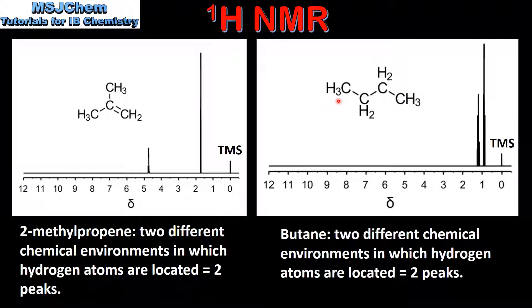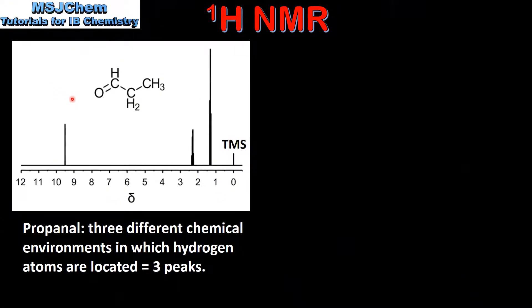Our next example is the NMR spectrum for butane. The three hydrogen atoms in the two CH3 groups are in the same chemical environment. The two hydrogen atoms in the two CH2 groups are also in the same chemical environment. So in butane there are two different chemical environments in which hydrogen atoms are located, which gives us two peaks on the NMR spectrum.